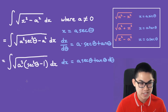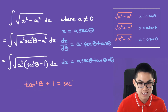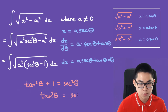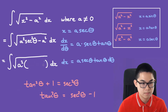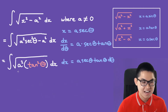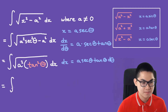There's a formula you need to know: tan squared plus 1 equals secant squared, which means tan squared equals secant squared minus 1. So the square root of a squared tan squared is just a times tan.